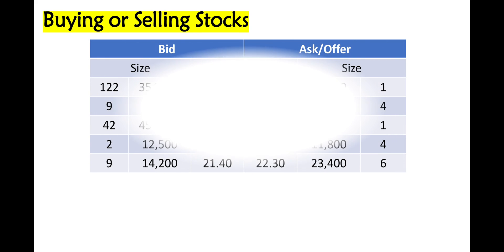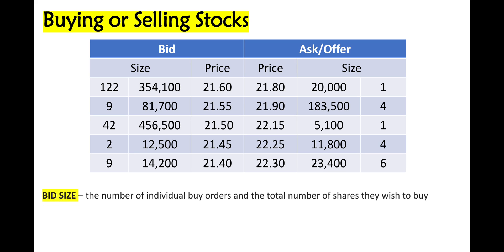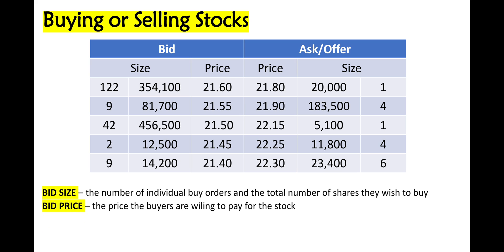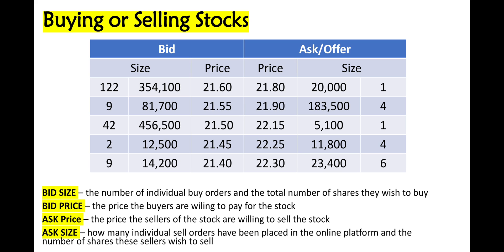Then we have the buying or selling stocks table. We have the bid size, which is the number of individual buy orders, the bid price, the ask price, and the offer price or the ask size. The bid size and bid price are for the buyers, and the ask price and ask size are for the seller. For example, the buyer's price is 21.60 with a size of 122, but the seller's price is 21.80 with one order placed in the online platform. Another example: the buyer's price is 21.55 with a bid size of 9, but the seller's price is 21.90 with a size of 4, which has been placed in the online platform.